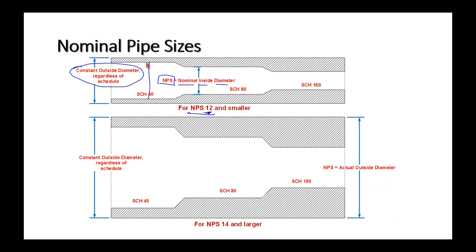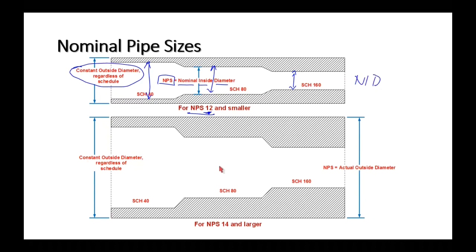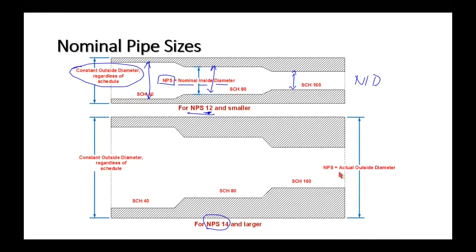For NPS 14 and larger, the NPS number refers to the actual outside diameter. So NPS 14 pipe has an actual outside diameter of 14 inches. It's still a constant OD regardless of schedule — but for large pipe, it's the actual OD, not a nominal inside diameter reference.